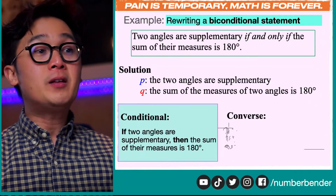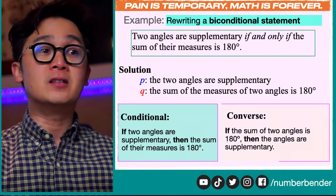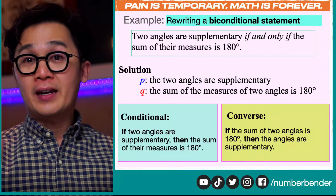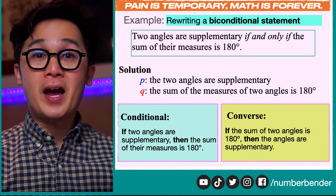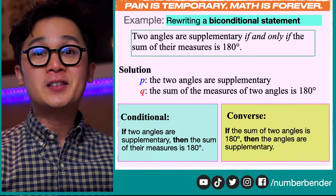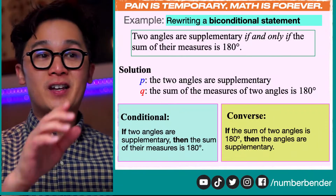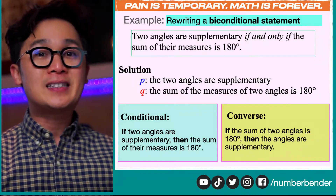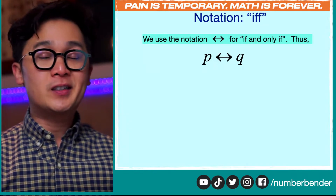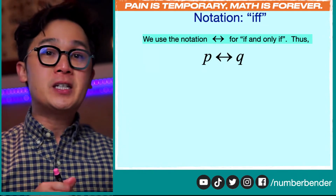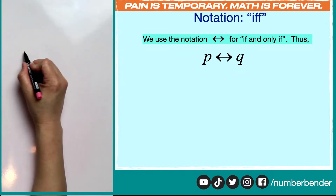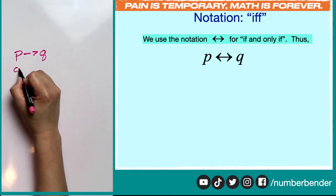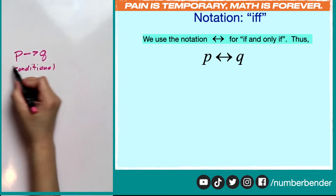In sentence form, the converse is: if the sum of two angles is 180 degrees, then the angles are supplementary. Now that we have the conditional and the converse, we're able to produce these two types of statements from the biconditional. This is basically how the biconditional statement works. In mathematics, notation is important because it is how we make shorthand for our verbal phrase. We know that the notation for a conditional statement is P → Q, which is read as 'P, then Q.'